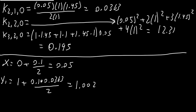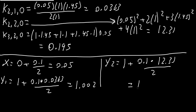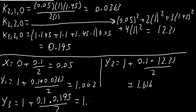Important note: the initial value won't change from 1. The only thing that changes is the value of k — in the first process we had k1,1,0, now we use k2,1,0. y2 equals 1 plus 0.1 times 12.31 divided by 2, giving 1.616. y3 equals 1 plus 0.1 times 0.195 divided by 2, giving 1.01.